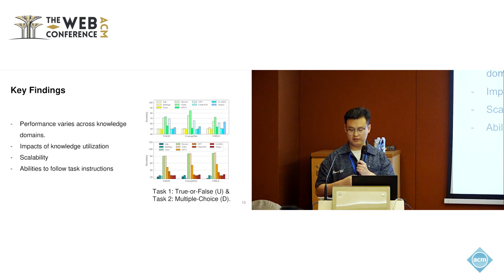The first one is model performance varies across knowledge domains, just like our assumptions. Moreover, what's more interesting is this conclusion is much more closely related to the format of knowledge utilization. For example, GPT-3.5 Turbo has the relatively best performance in the common sense domain, but when it comes to task two, it has the relatively best performance in biomedical domains. This demonstrates the necessity of taking both knowledge domain and knowledge utilization formats into account when evaluating the knowledge ability of large language models.